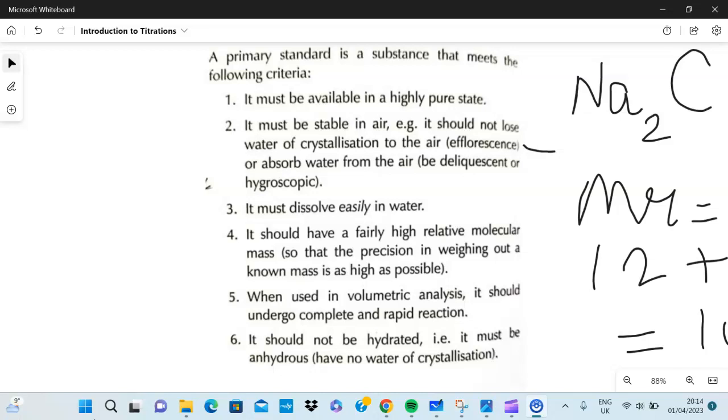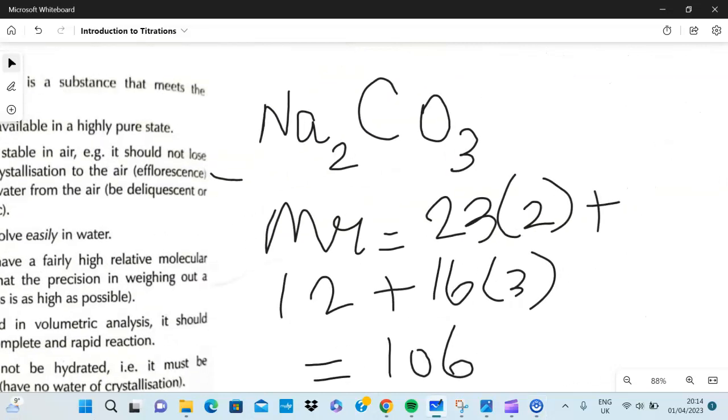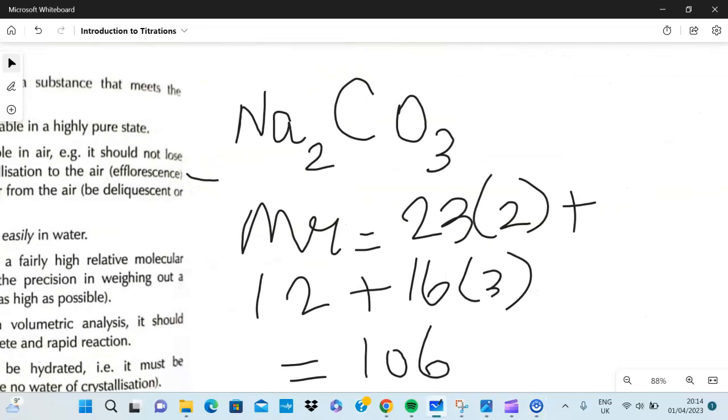It must dissolve easily in water. We are not going to be stirring the reagent in water forever. It should have a really high molecular mass. If you look here, sodium carbonate is Na2CO3. The molecular mass is sodium 23 times 2, carbon is 12, and oxygen is 16 times 3.